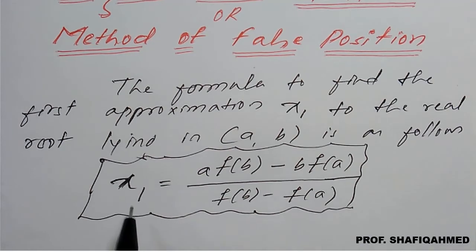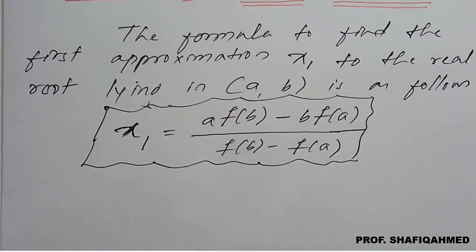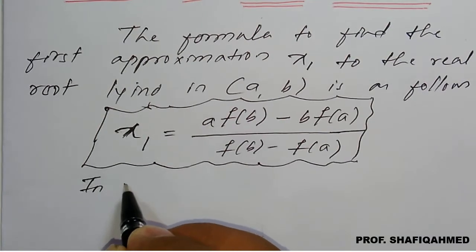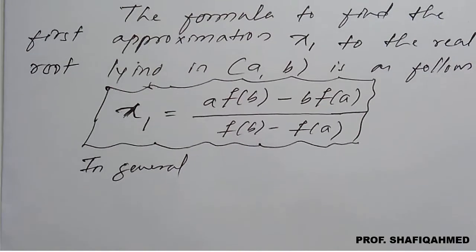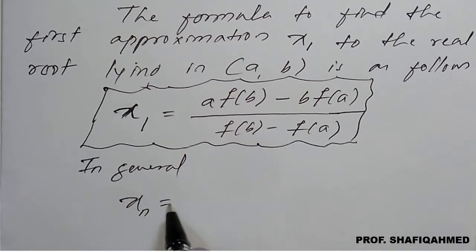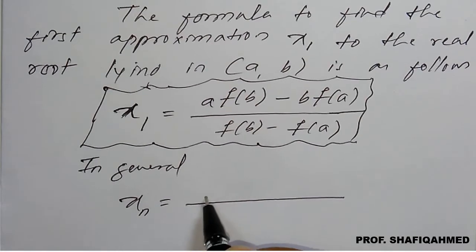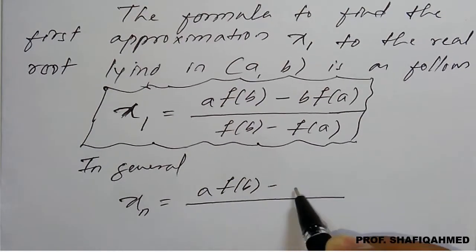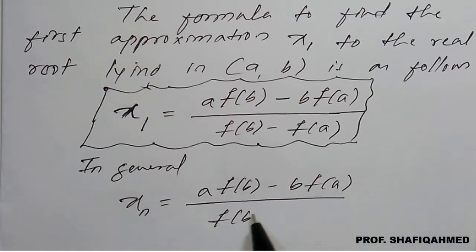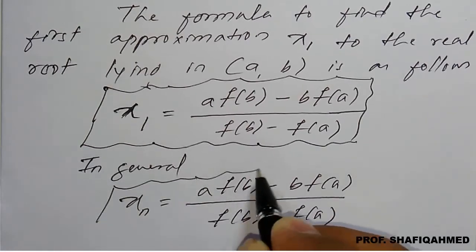Similarly if you want to go for second iteration x2 the same formula, x3 the same formula, so on. In general it is nothing but xn is equal to a f of b minus b f of a divided by f of b minus f of a. So n takes the value out here